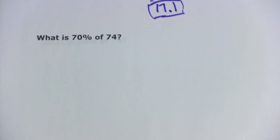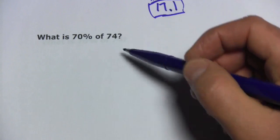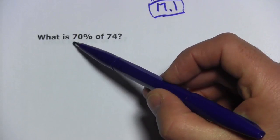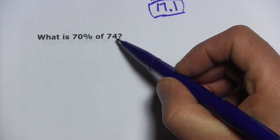Let's try another one. This one says, what is 70% of 74? So, two steps here. Convert the percent to a decimal, and then multiply.